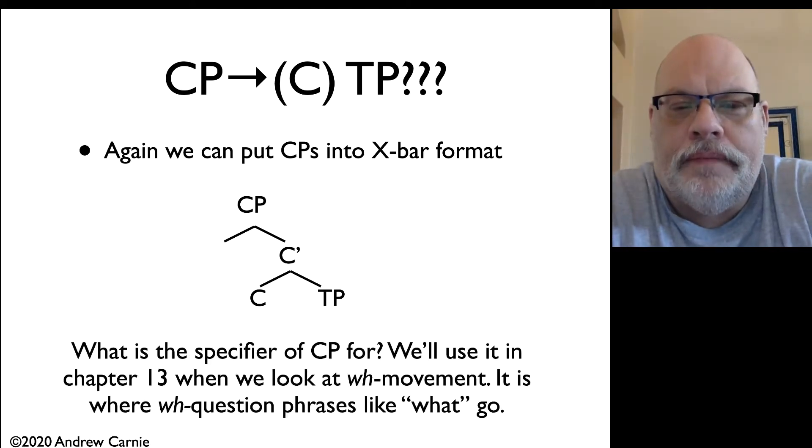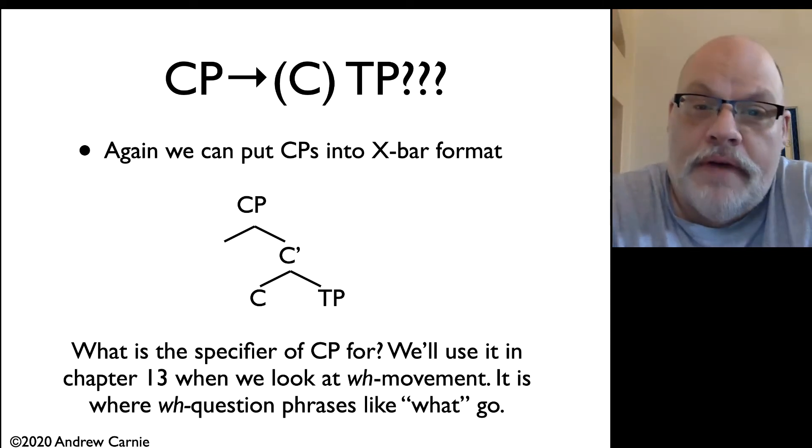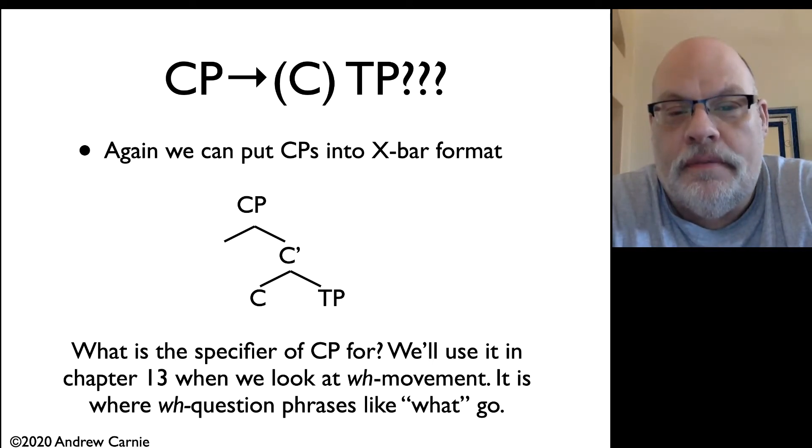Now you might look at this and say, what is that specifier there for? And can you have adjuncts to CPs? These are great questions. The specifier of CP is a place we're going to move question phrases like what and when and where into. The complement position is pretty clearly almost always a TP. Adjuncts are a little trickier. There may be some arguments for some CP level adjuncts, like frequently, or yesterday, or phrases like that, that seem to modify the finiteness or modify the clause as a whole, or other ones might include expectedly.